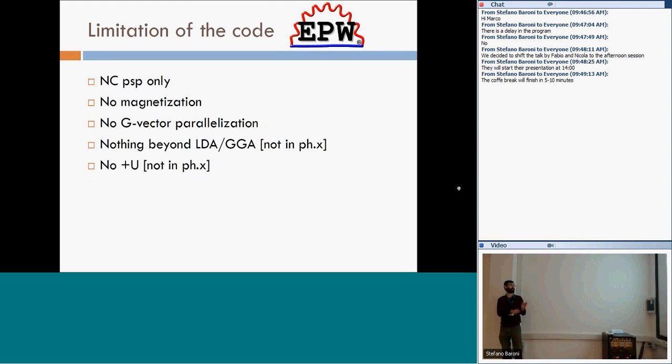So far, we only have norm-conserving pseudopotential that is implemented. But we really plan to also support ultrasoft PAW. We have no k-vector parallelization, which means that so far we can only use checkpoint parallelization. We cannot have any other functional except LDA and GGA. There are no hybrid functionals. But there are basically limitations that are inherited from the phonon code. And then for DFT+U, which is also an extension of the phonon code.